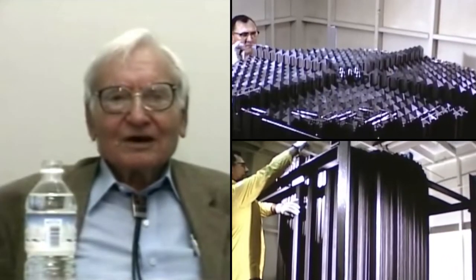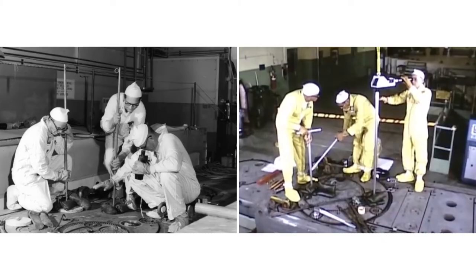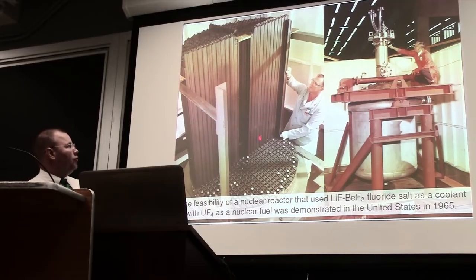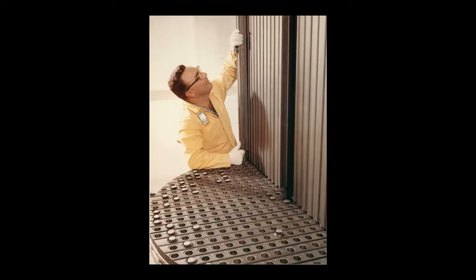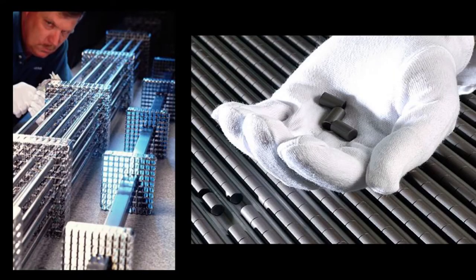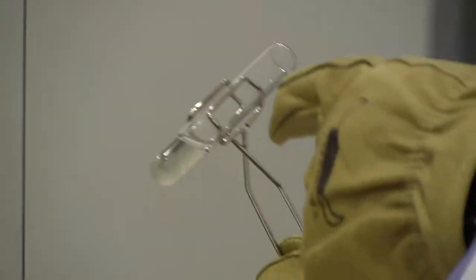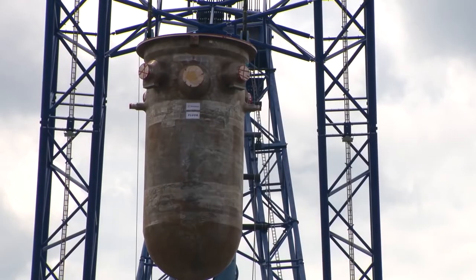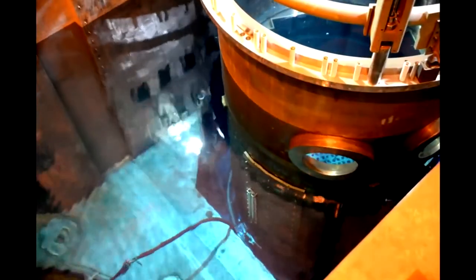The molten salt reactor experiment was one of the most important and I must say brilliant achievements of the Oak Ridge National Laboratory. You nuclear engineers are probably going to think those are fuel rods. They're not. They're graphite. The fuel was a liquid that flowed through channels in this graphite. Instead of having solid fuel in a liquid moderator, liquid fuel in a solid moderator.